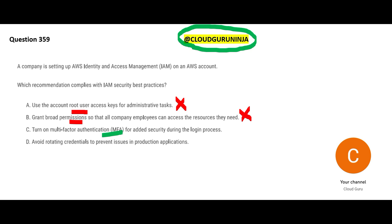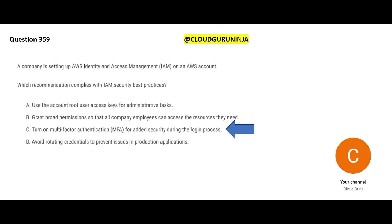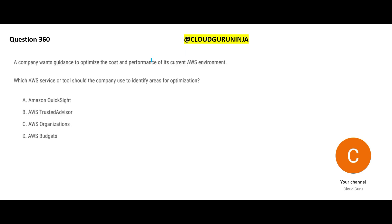From a security standpoint, granting broad access is against best practice. You should get access only for what you require — if you need the ground floor, you get access only to the ground floor. Option C says to avoid rotating credentials to prevent issues — that is a false statement. You should rotate credentials frequently so that if someone hacks them, rotating limits the damage. Change your passwords every three months. MFA is the final answer.